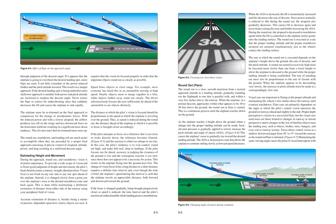On final approach, the pilot must estimate where the airplane will land through judgment of the descent angle. If it appears that the airplane is going to overshoot the desired landing spot, more flaps are used if not fully extended, or the power reduced further and the pitch attitude lowered, resulting in a steeper approach. If the desired landing spot is being undershot and a shallower approach is needed, both power and pitch attitude are increased to readjust the descent angle. Never retract the flaps to correct for undershooting, since that suddenly decreases the lift and causes the airplane to sink rapidly.